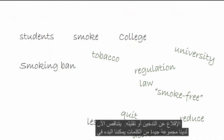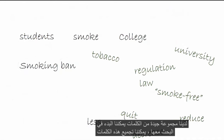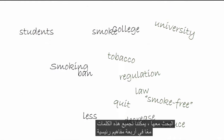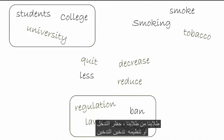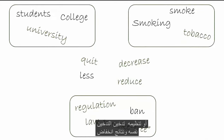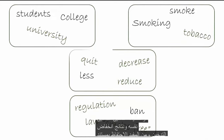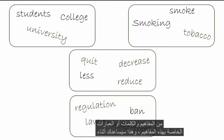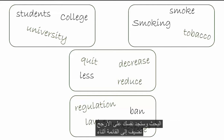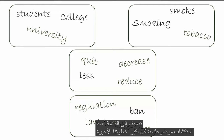Now we have a good set of words we can begin searching with. We can group these words together into four main concepts: our population — students; the intervention — banning or regulation of smoking; smoking itself; and the outcome of decreased smoking. It's helpful to keep a document of your concepts and words or phrases for those concepts. This will help you as you search, and you will likely find yourself adding to the list as you explore your topic further.